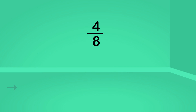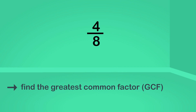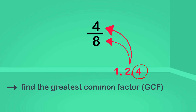First, we find the greatest common factor of both the top number and the bottom number. The greatest common factor is the largest number that will divide evenly into both numbers. One, two, and four are all common factors. The largest common factor is four.